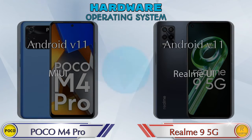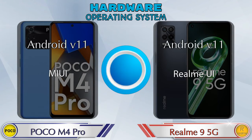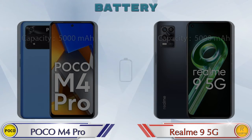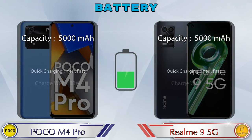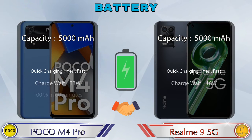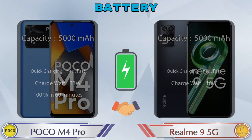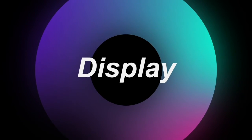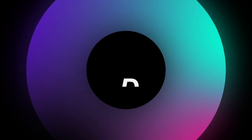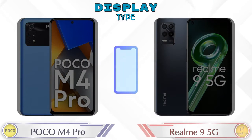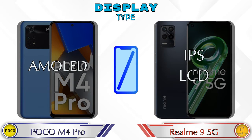Both phones have the same Android v11 operating system. Now let's see the information about the display. If we talk about display type, Poco M4 Pro has AMOLED and Realme 9 5G has IPS LCD display.